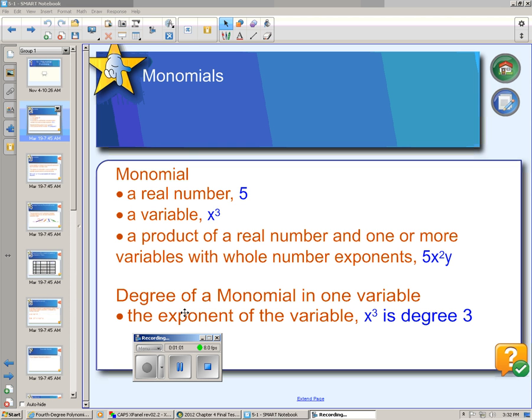The degree of a monomial, if there is only one variable, is named based on the highest exponent. So since this is x to the third, this is degree 3 which could be called a cubic.